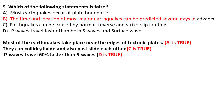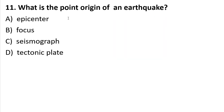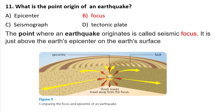Question 10: What is the origin point of an earthquake? A) Epicenter, B) Focus, C) Seismograph, D) Tectonic plate. The point where an earthquake originates is called the seismic focus. The epicenter is the point on the Earth's surface directly above the focus. So the answer will be B — focus — which is the center of the earthquake, meaning the earthquake starts from that point.